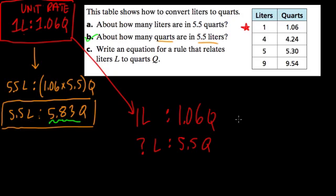And there's lots of ways to solve this, but what I like to do is look at what did I have to multiply the number of quarts by here to get 5.5. Because with a ratio to keep it equivalent, I have to multiply this side by the same amount. That's a key.